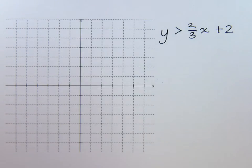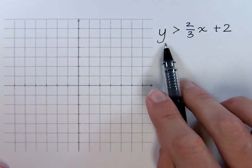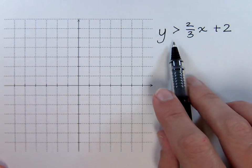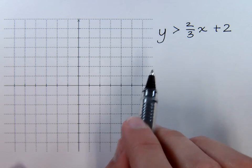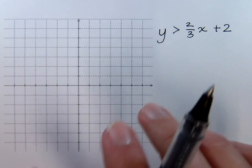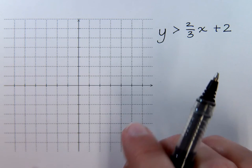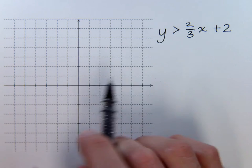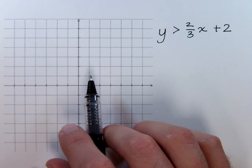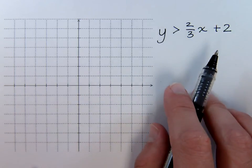In this video we want to look at graphing linear inequalities in two variables, so we have x and y as part of this linear inequality. We did work with linear inequalities before, but that was when it was just x and we weren't graphing in two dimensions. So remember what we talked about before: